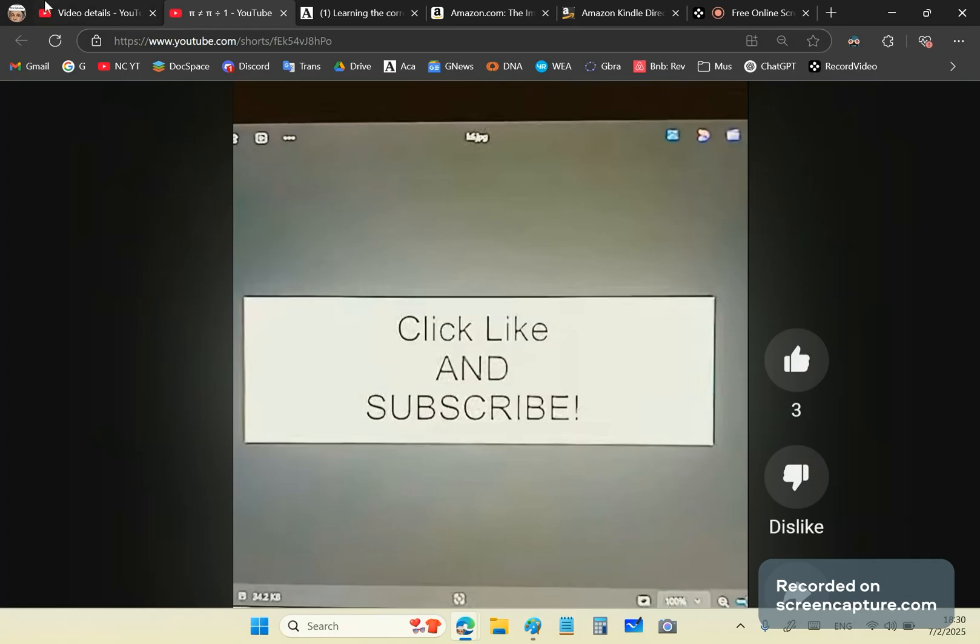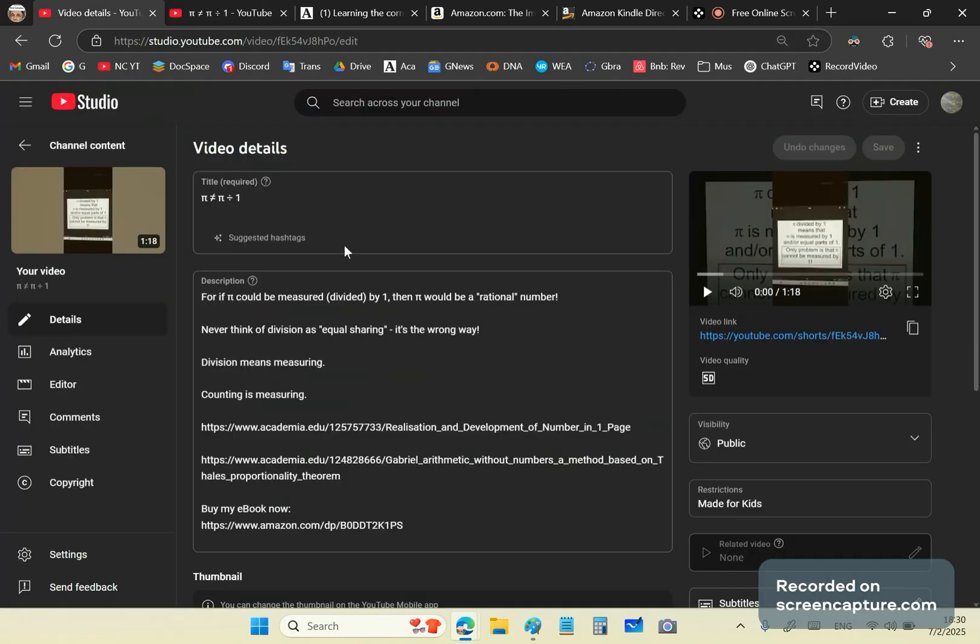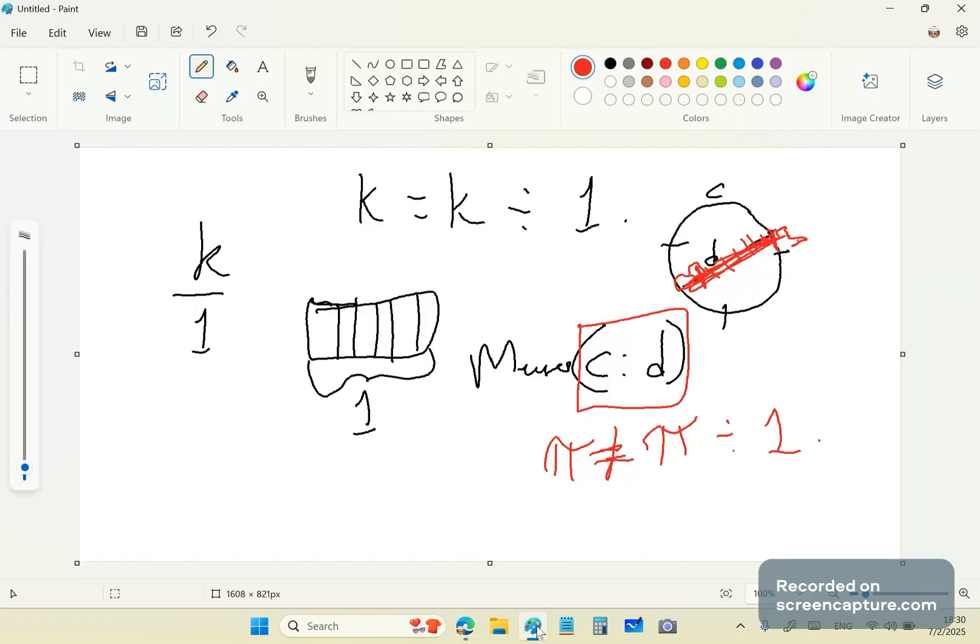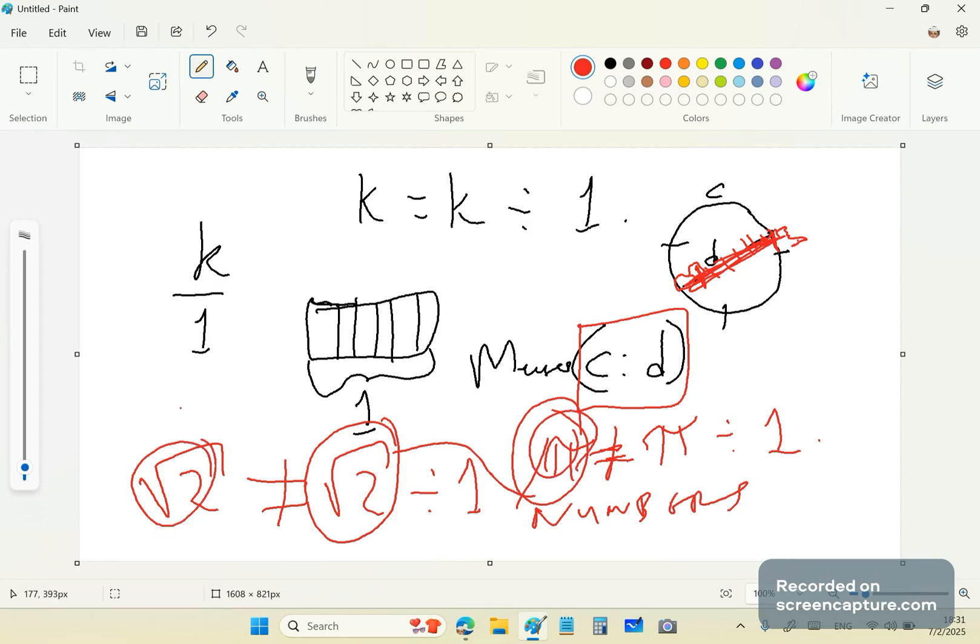Now that you've learned that pi is not equal to pi divided by one, now explain to me why square root two is not equal to square root two divided by one. Because neither square root two nor pi are numbers. And not numbers. There is no such thing as a number pi or a number square root two or a number e or any of that bullshit which you taught in mainstream mathematics.